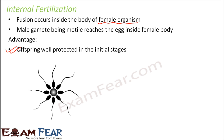Even though fewer offspring are produced in internal fertilization, the ones that are produced remain safe with much less chance of being eaten by predators. In humans, internal fertilization takes place — when fusion occurs, a zygote is formed and the woman becomes pregnant. She carries the baby inside her womb for nine months, keeping the baby safe until it is strong enough to survive on its own, after which delivery happens.